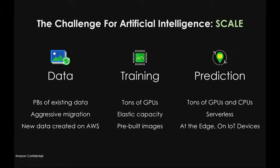Once you have the model — you have the data, you've trained the algorithm you've chosen — you have a model, which is nothing but binary code. Now you need to deploy the model so you can do prediction. For all the conferences happening today, I want to know who would rate my speech one to five, and for all those who rated one, I'll have a one-on-one conversation after the meeting. That prediction also needs compute.